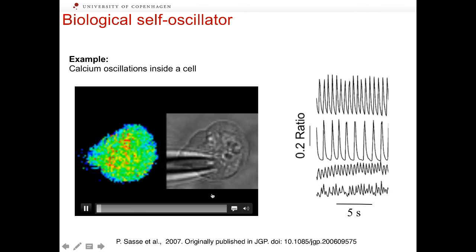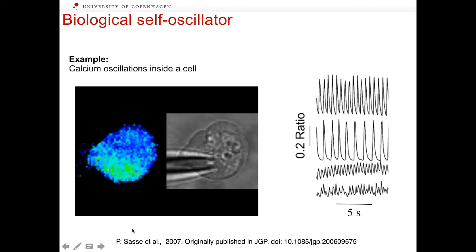An example of self-oscillations in a cell is illustrated in this slide. This is an embryonic heart cell in which the concentration of ions of calcium fluctuates in the course of time.